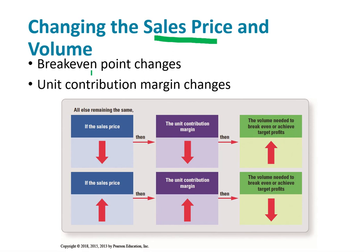Looking at the break-even point and unit contribution margin: when the sales price goes down, the contribution margin goes down, and typically the volume needed to break even goes up. If your sales price goes down, contribution margin decreases, meaning you need greater volume to break even. Conversely, if you raise the sales price, your contribution margin goes up and the volume needed to break even goes down. There's an indirect relationship between sales price and break-even volume.